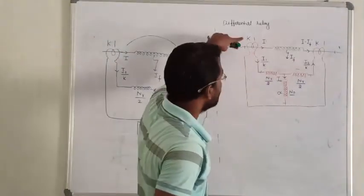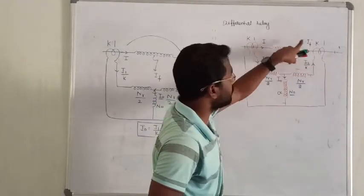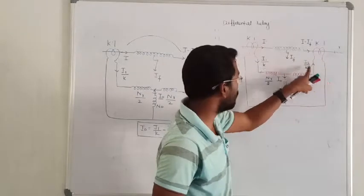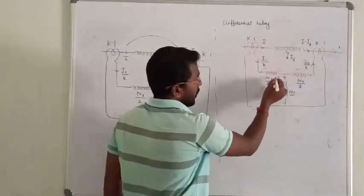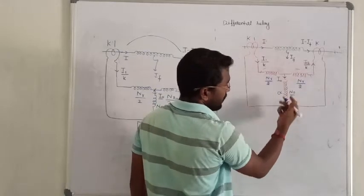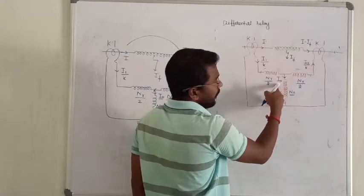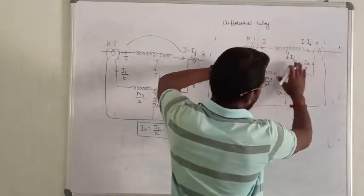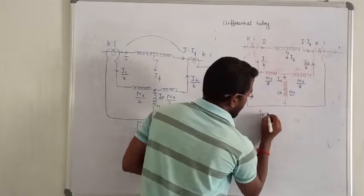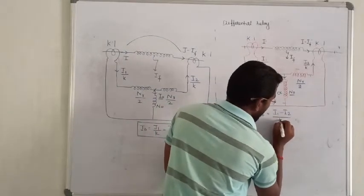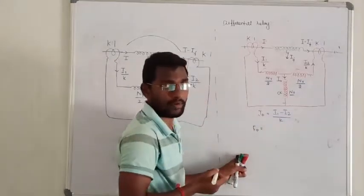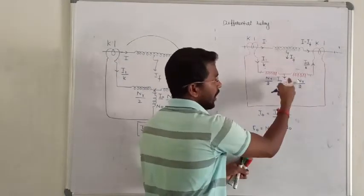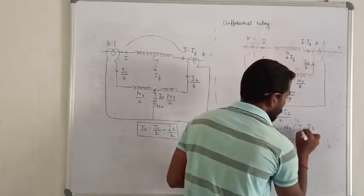Just observe this circuit now. Same thing I have done — transmission line. We can get the value of I0. I1 and I2 by K.